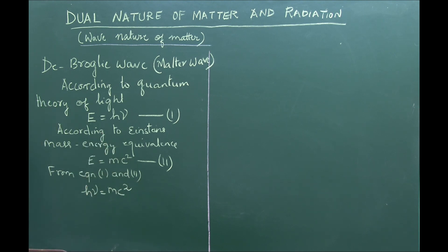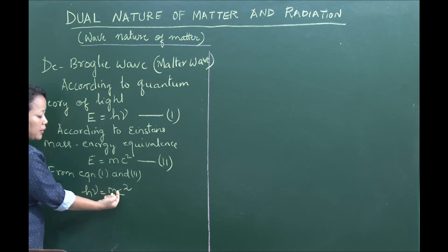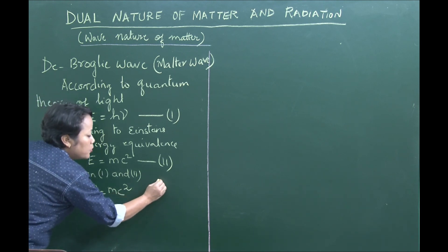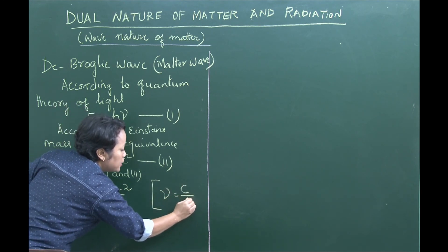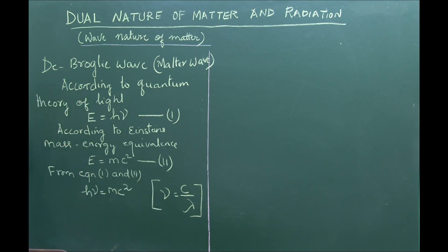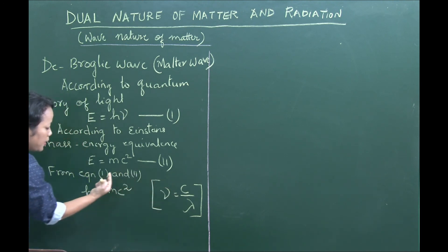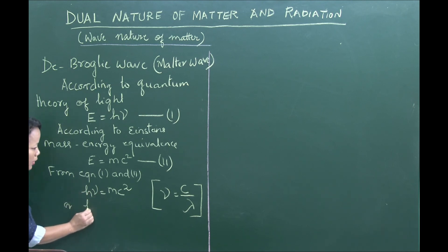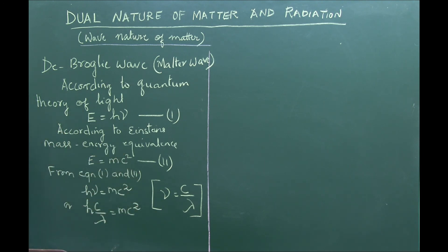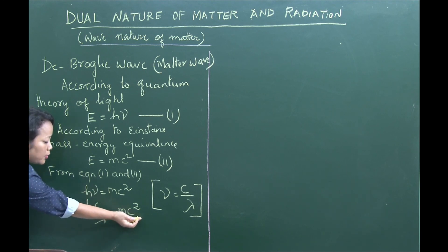Here h is Planck's constant, ν is the frequency of light, m is the mass of the particle, and c is the speed of light. Since frequency ν equals c divided by λ (wavelength), we substitute: H × (c/λ) = mc².